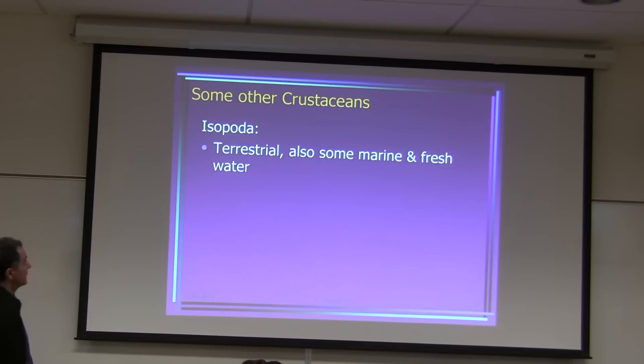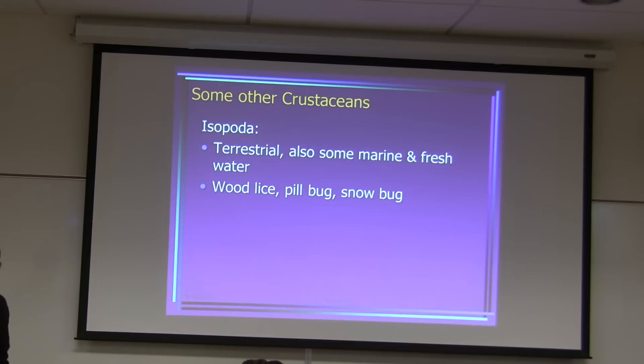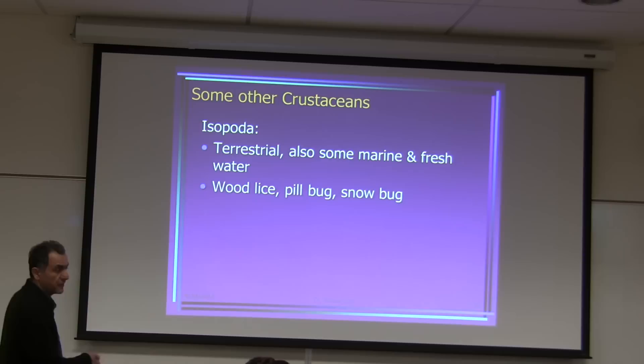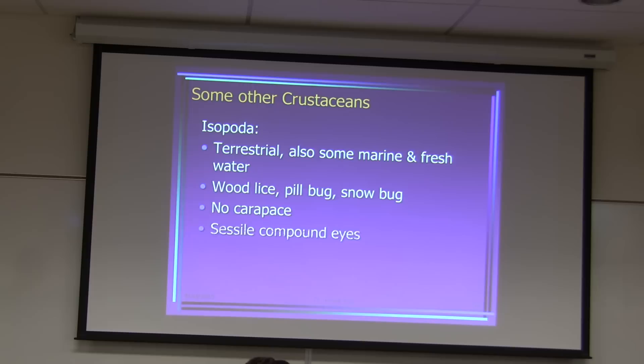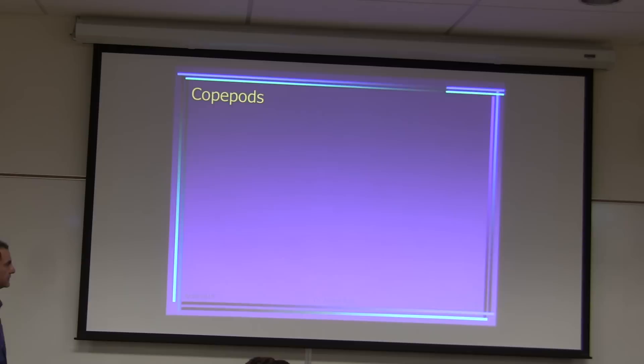Isopoda — some are marine and freshwater, no carapace usually, with segmented bodies and gills. Wood lice and pillbugs belong here. If you played with pillbugs as a child, those are crustaceans.